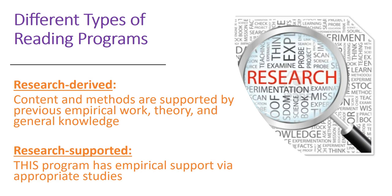Starting with the research base, there are different types of reading programs. The first type are programs that are research-derived — these are programs where the content and methods are supported by research, theories, and general knowledge about reading instruction. Research-supported programs are programs that have empirical support through appropriate studies, with research studies conducted with that particular program, usually explaining successes in a research environment. The stronger programs are going to be the ones that are research-supported.